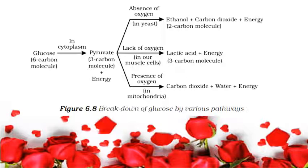The release of energy in the aerobic process is a lot greater than in the anaerobic process. Sometimes, when there is a lack of oxygen in our muscle cells, another pathway for the breakdown of pyruvate is taken. Here, the pyruvate is converted into lactic acid, which is also a 3-carbon molecule. This buildup of lactic acid in our muscles during sudden activity causes cramps.